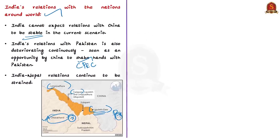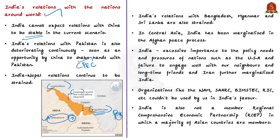Fourth, the author notes that even though India had made efforts to improve relations with Bangladesh, Myanmar and Sri Lanka, no worthwhile results are seen up to date. Fifth, with respect to Central Asia, India has been marginalized as far as the peace process of Afghanistan is concerned — India was not invited for the negotiations with respect to the Afghanistan and Taliban deal. The author also notes that India gives excessive importance to the policy needs and pressures of nations such as the United States.